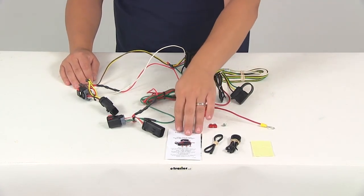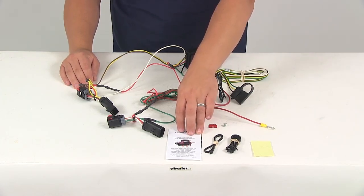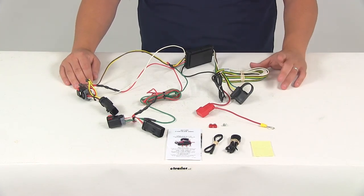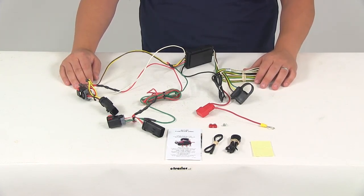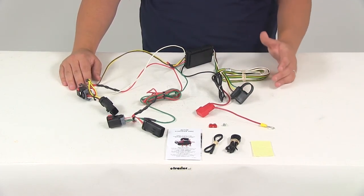It's also going to come with very detailed instructions. These are going to walk you through the installation process step by step and one last thing to mention is that it is recommended that you use a small amount of dielectric grease on all electrical connections like the plugs on your vehicle and the four-pole connector itself. That's going to help prevent any type of corrosion.